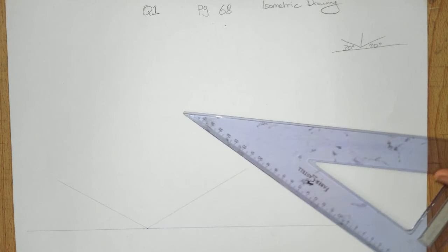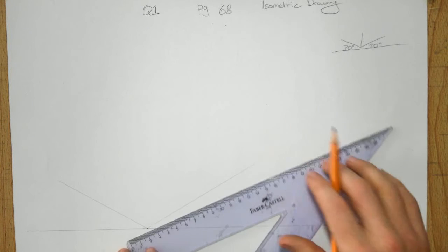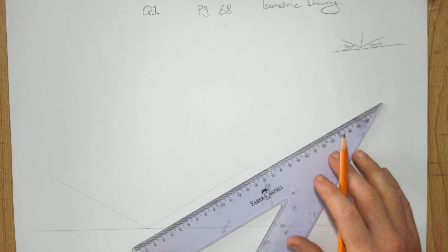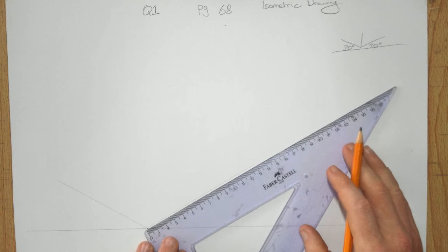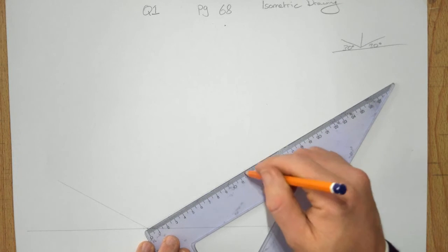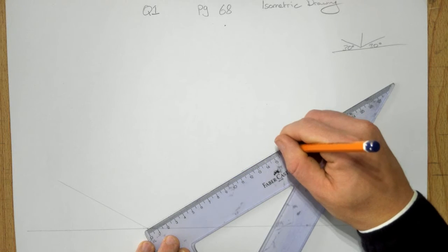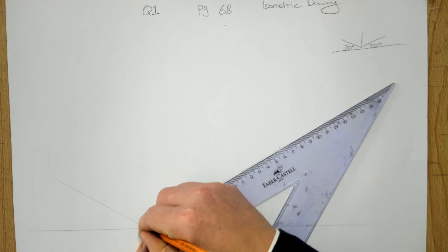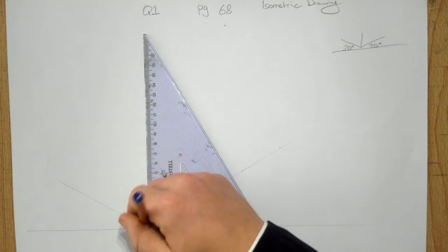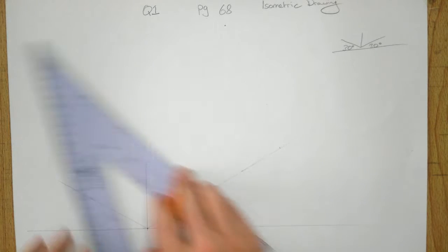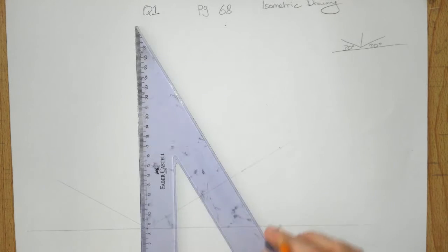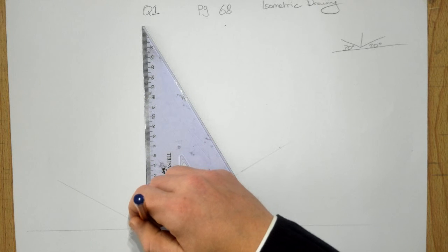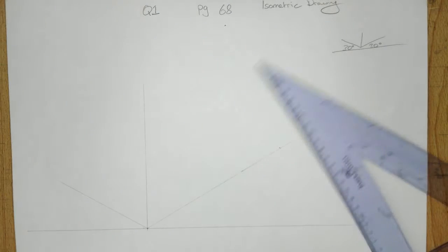So we're using our 30-60 degree set square, not our 45. We'll put all the measurements in there. It's very important to have three lines: our 30 degrees going this way, 30 degrees going this way, and then our horizontal line.